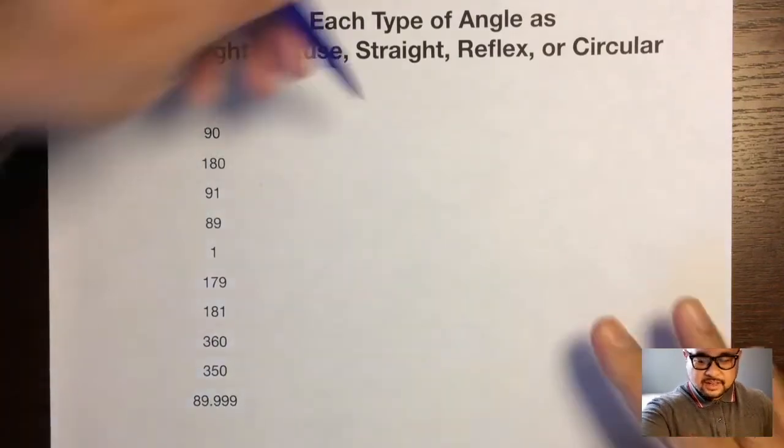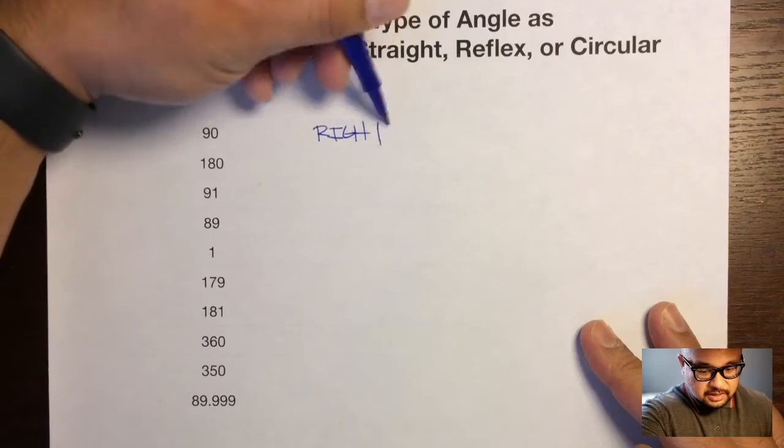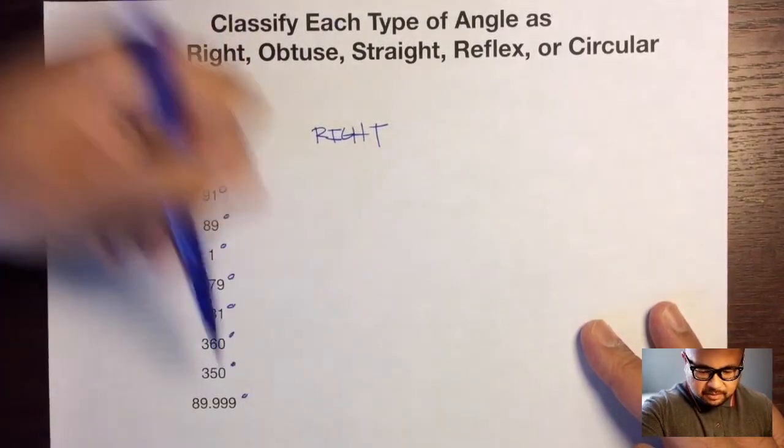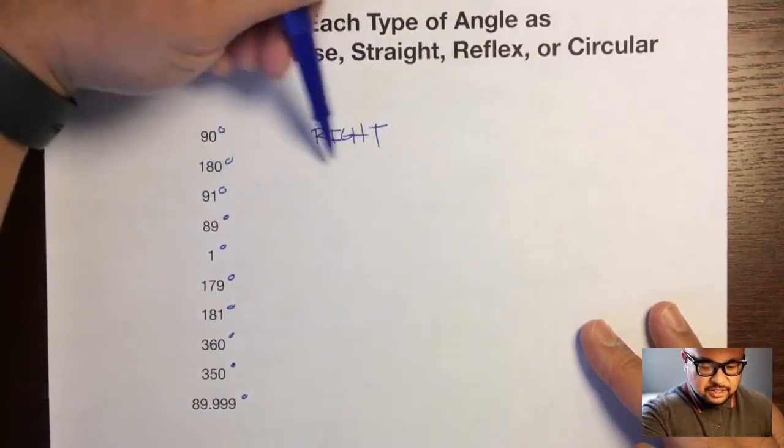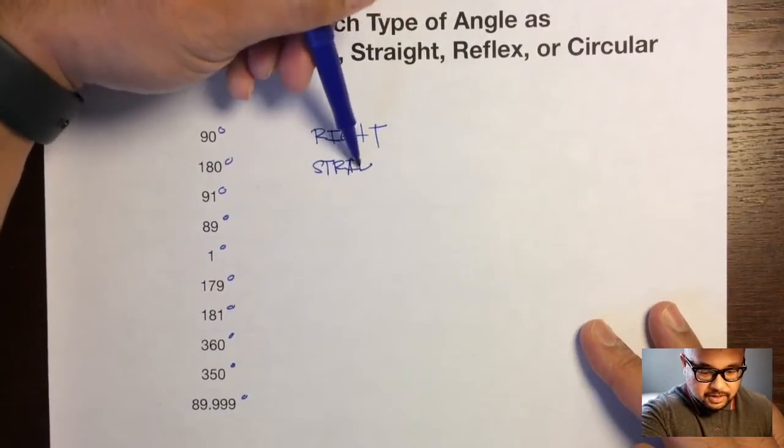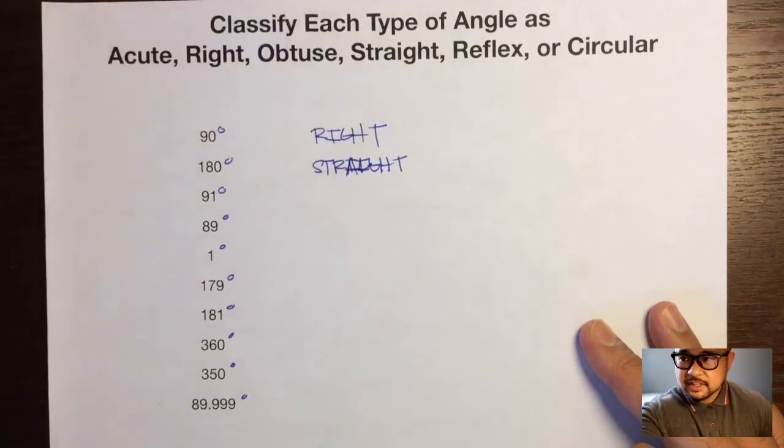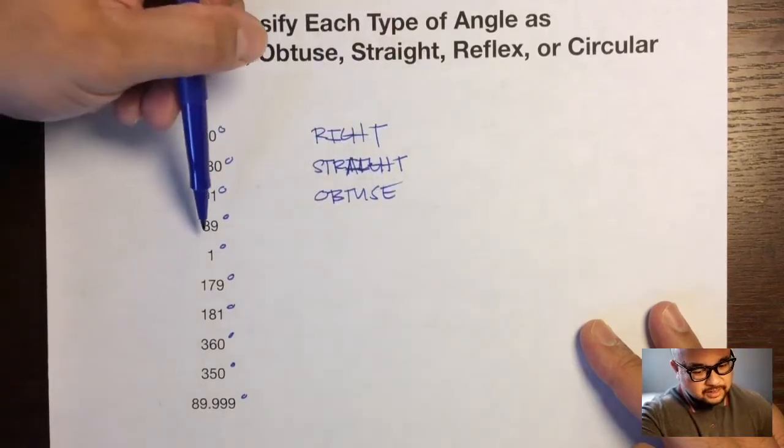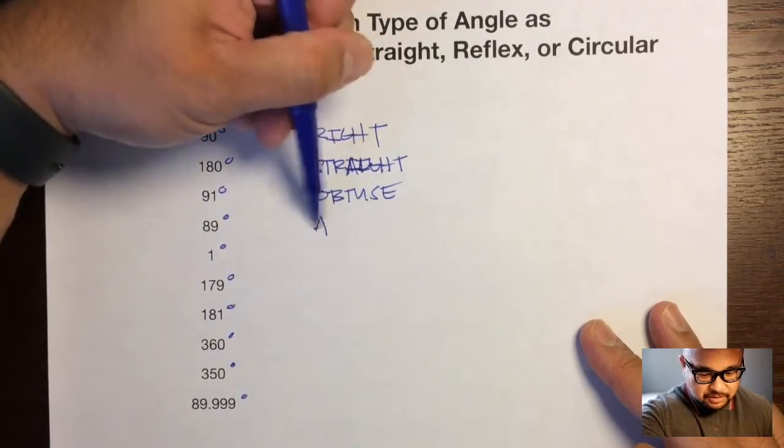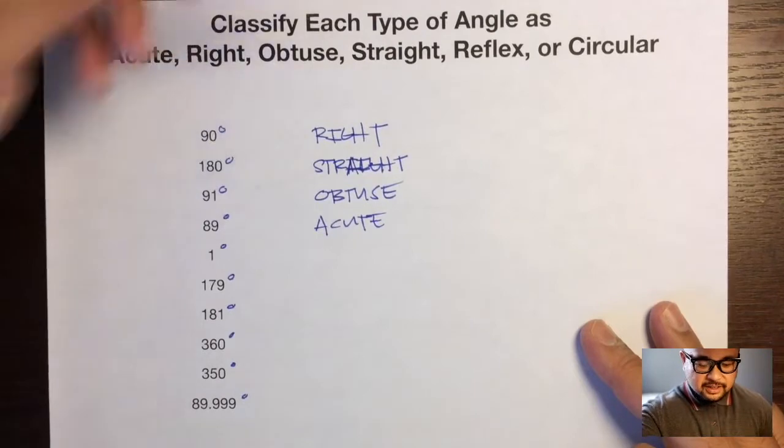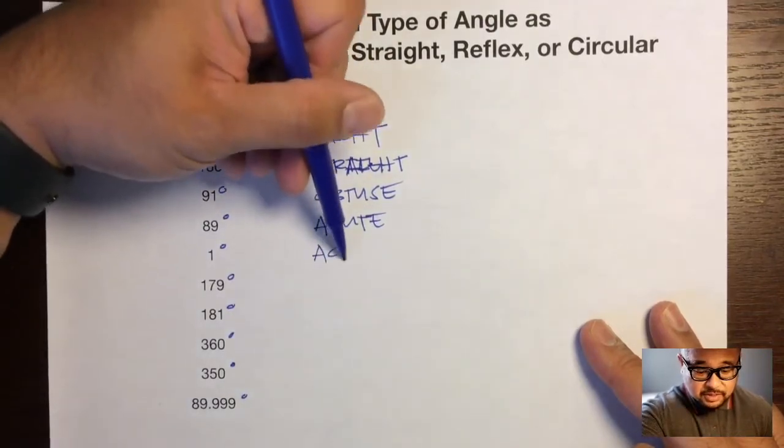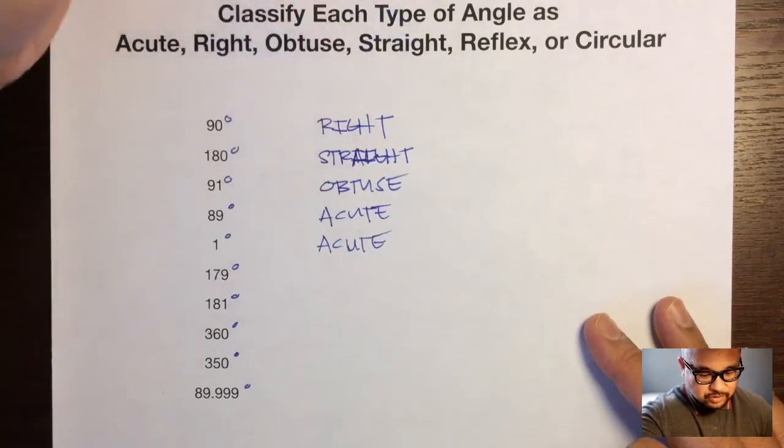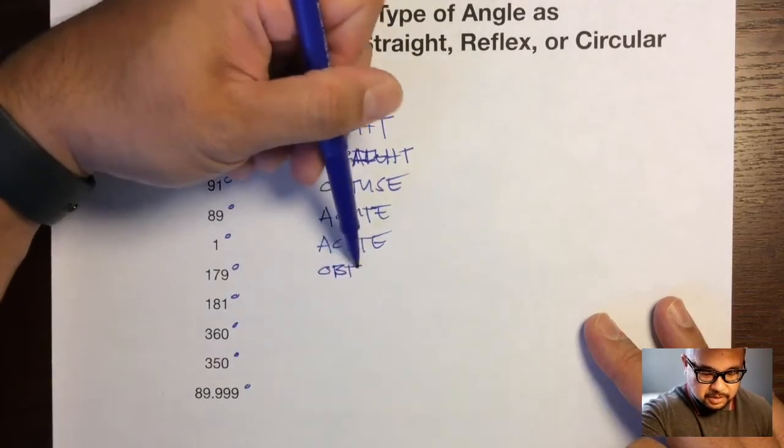Okay, so let's go over this. 90, we know that's right. 180 degrees, straight. 91, that's more than a right, so that's obtuse. 89, less than a right, which would be acute. That's such a cute angle. One degree, it's still less than 90, so that's an acute angle. 179, that is less than 180 degrees, so that would be obtuse.